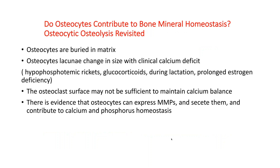We found an entity called osteocytic osteolysis. Osteocytes are buried in the matrix, and their lacunae can change in size with clinical calcium deficits. This has been reported with hypophosphatemic rickets, glucocorticoids, during lactation, and prolonged estrogen deficiency. The osteoclast surface may not be sufficient to maintain calcium balance in certain disease states, and there is evidence that osteocytes can express metalloproteinases and slowly resorb their matrix, contributing to calcium-phosphorus homeostasis.